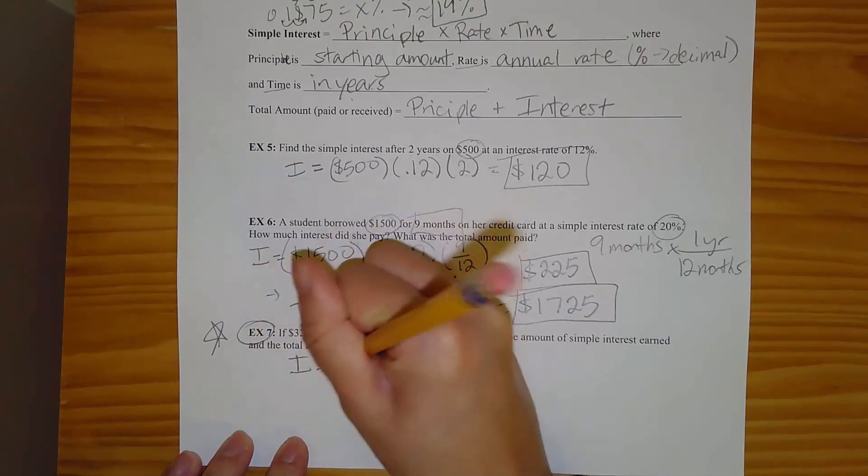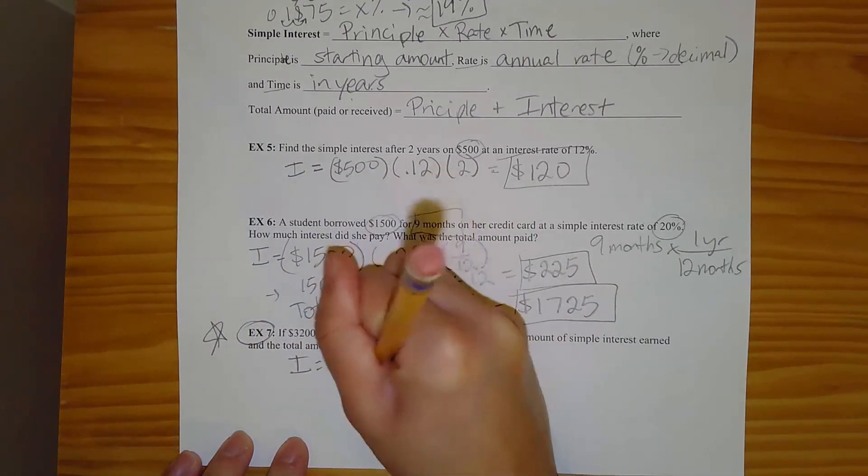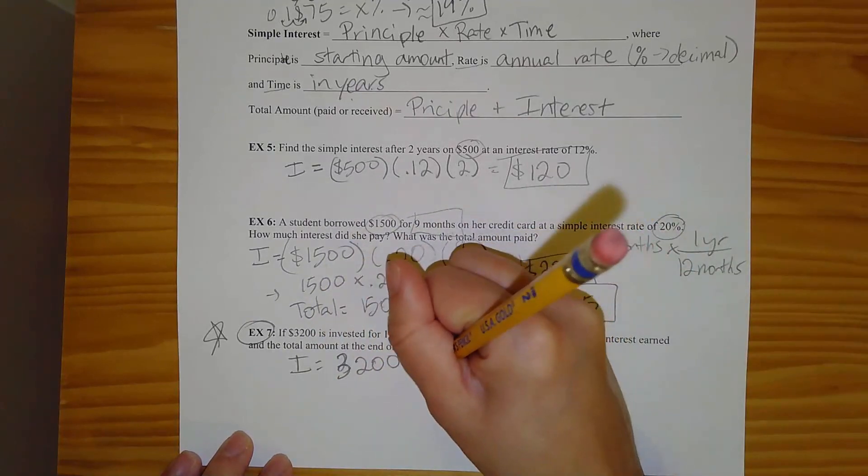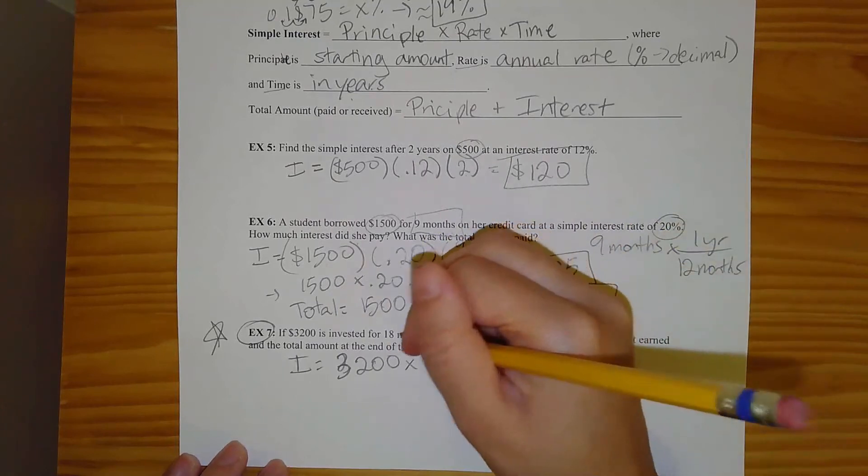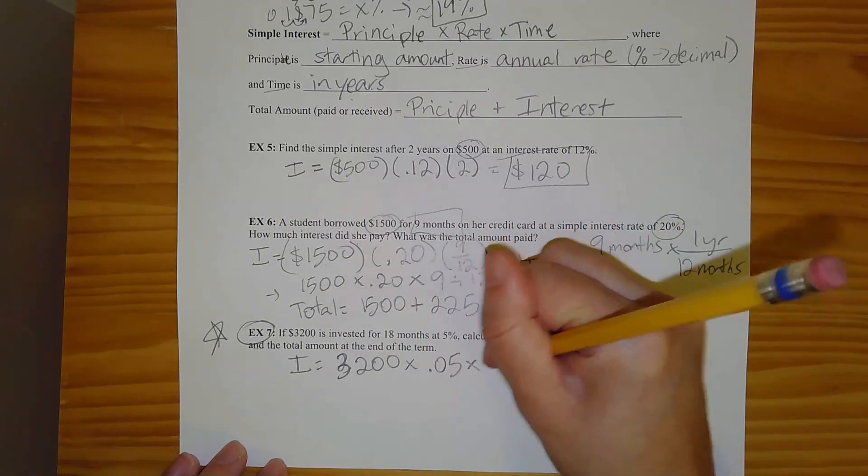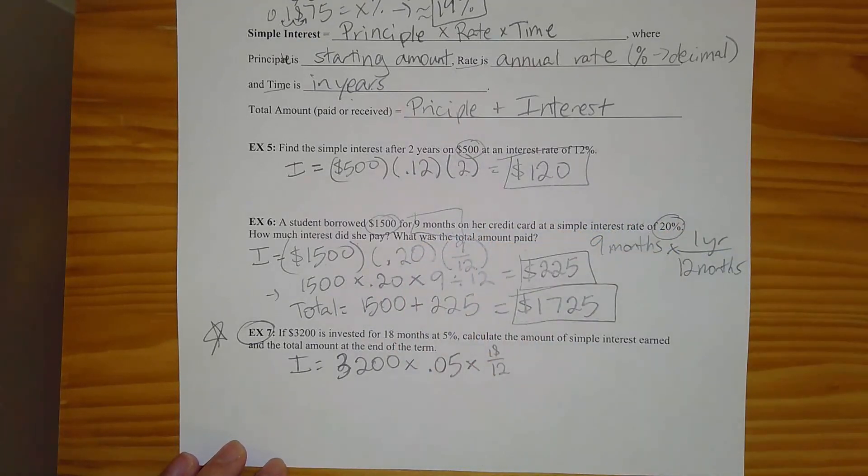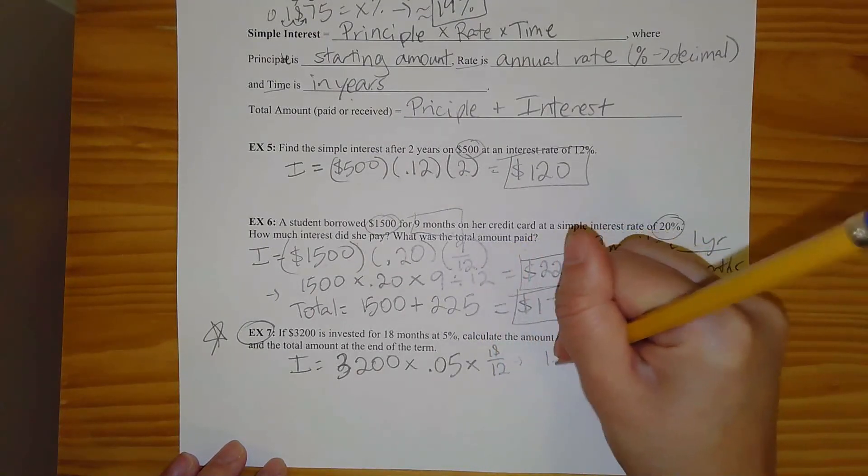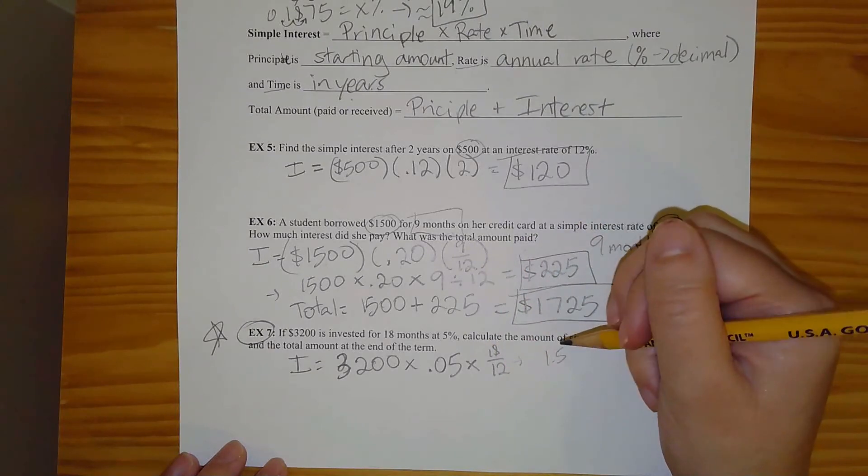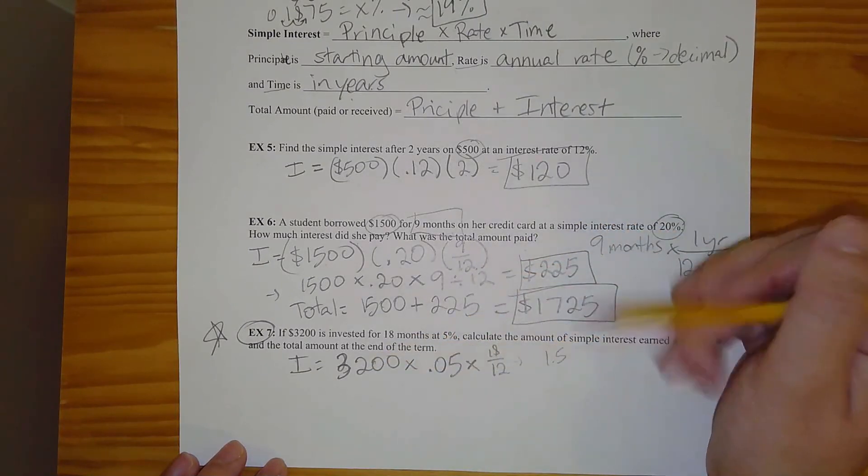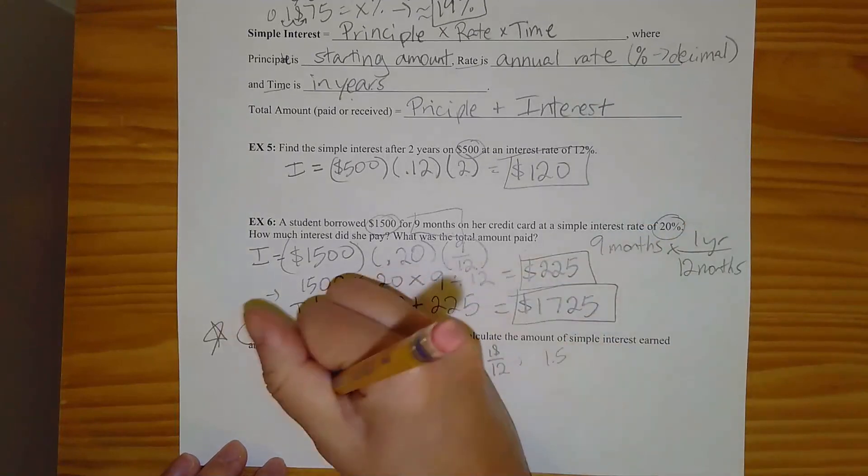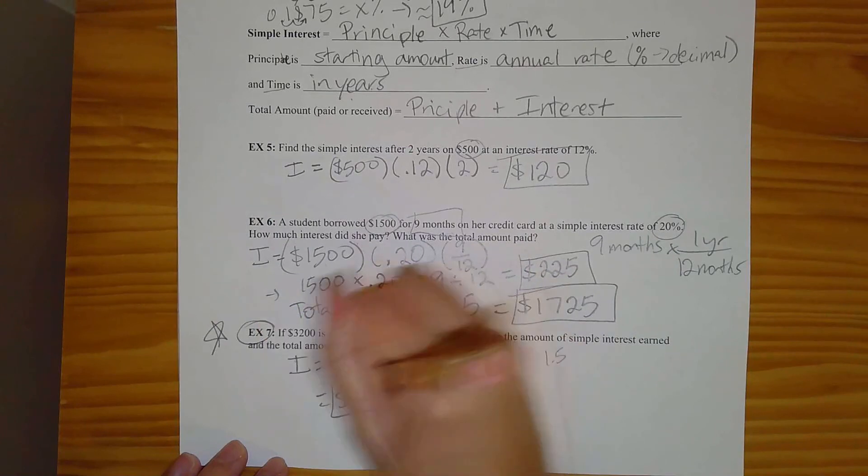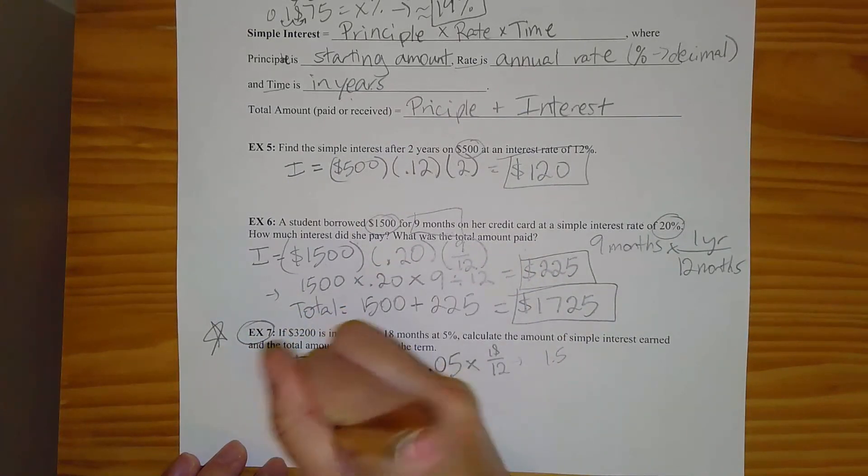To find your interest, you should be doing, oh goodness, that's a terrible three, 3,200 times the rate, which would be 0.05 times the time. So you could do 18 over 12, or it actually works out very nicely. That also simplifies to 1.5 if you want to simplify that. So if you do 3,200 times 0.05 times 1.5, you should get $240 in interest.